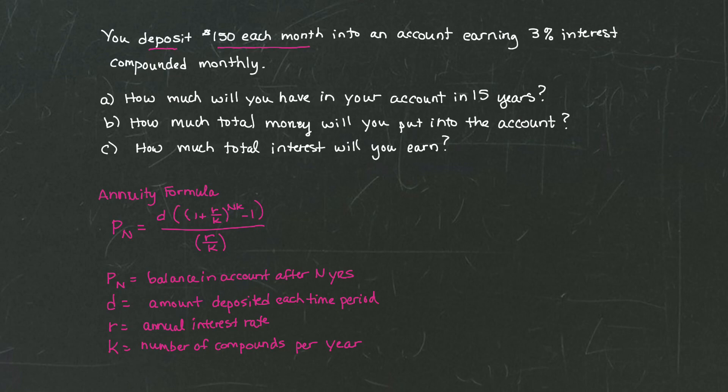Let's start with part A. So in part A, we're asked, how much will you have in your account in 15 years? So let's identify the pieces of information. P sub n is actually what we're looking for. And specifically, we're looking for the amount after 15 years, the balance in our account 15 years after we start our investments. However, we do know what D is. D is the monthly payment that we deposit, and that's 150.